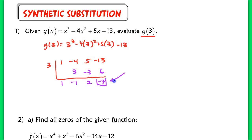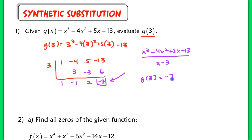And if I add here, I end up with negative 7. This negative 7 represents the remainder. If you were to take your polynomial x cubed minus 4x squared plus 5x minus 13 and divide it by x minus 3, you would have a remainder of negative 7. Not only is that the remainder, but it also tells you what the function value is when evaluated at x equals 3. In other words, g of 3 is equal to negative 7, so we have the coordinate (3, negative 7) on the graph.